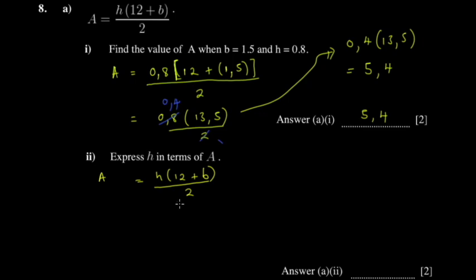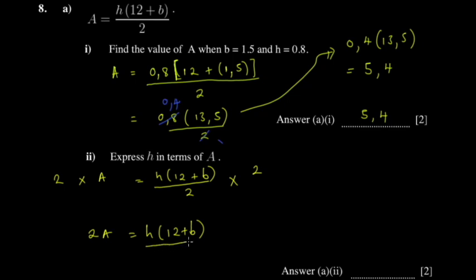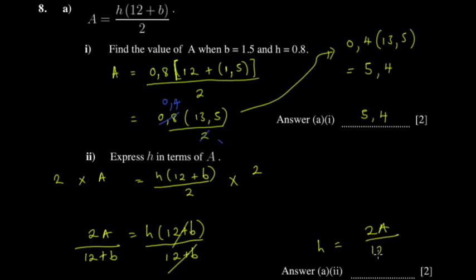In this case, we need to isolate 'h', which means we get rid of things one by one. The first thing to do is get rid of the 2 — multiply both sides to clear it. You get 2a equals h times (12 plus b). Then divide both sides by (12 plus b), and you get h equal to 2a divided by (12 plus b).